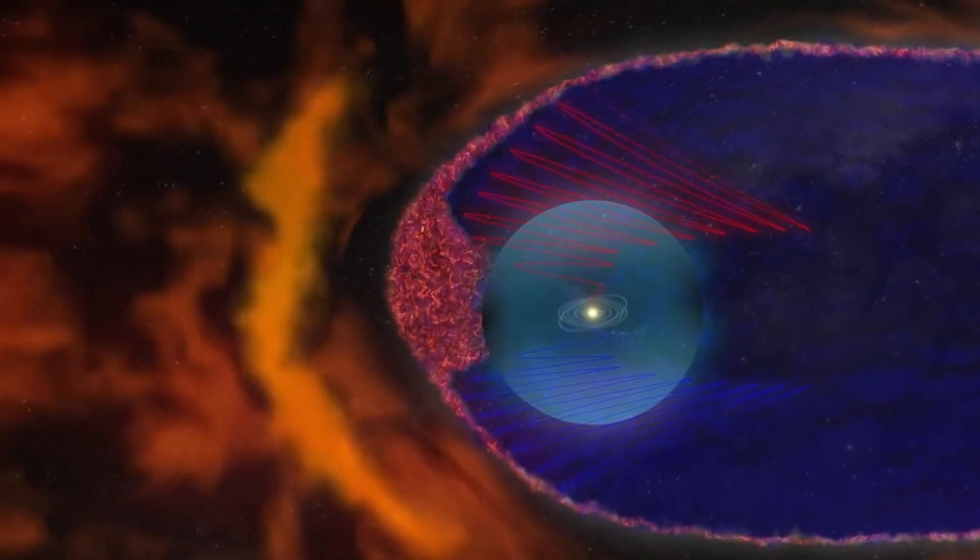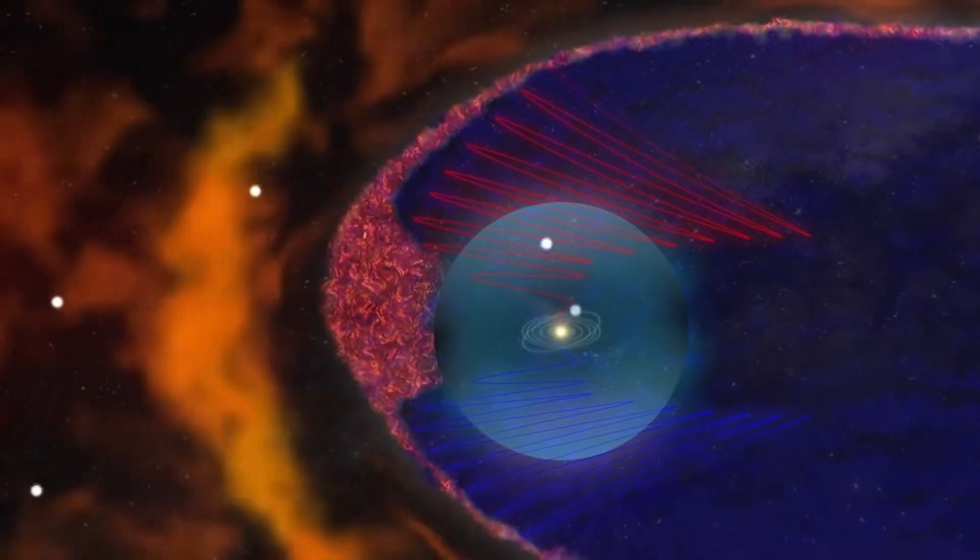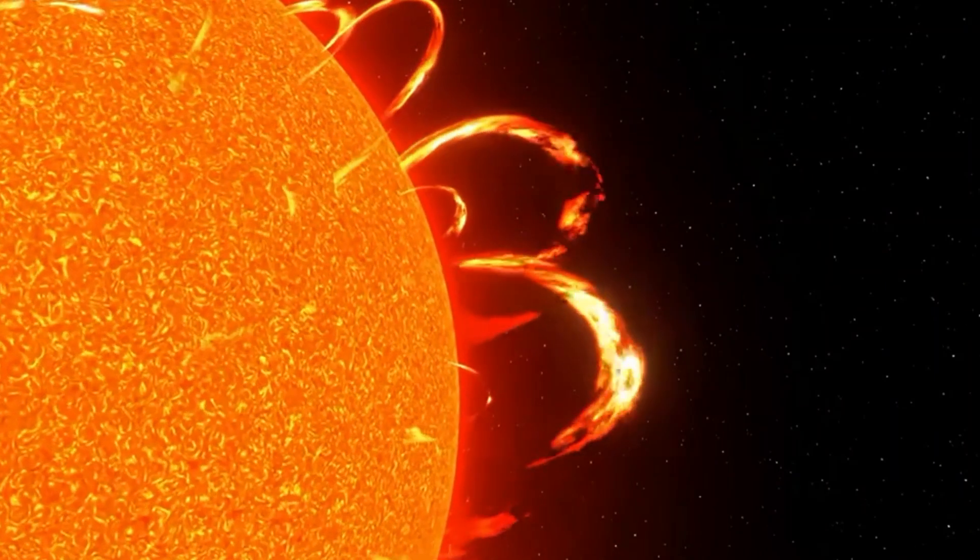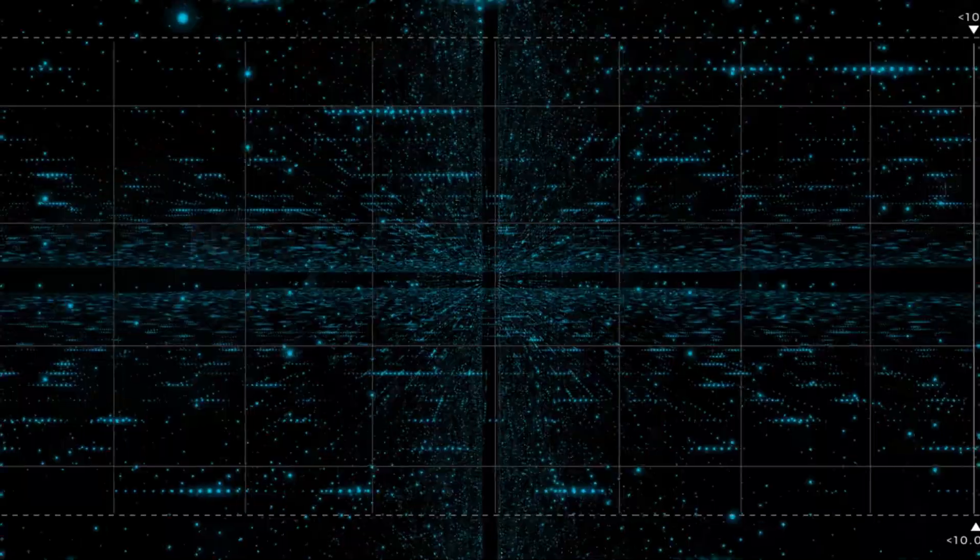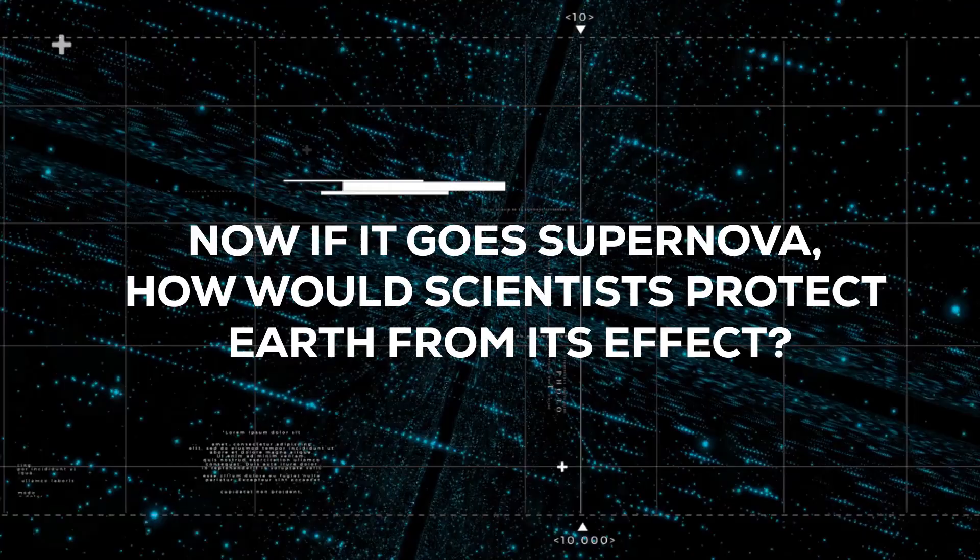It is believed that the magnetic field of Betelgeuse is several thousand times stronger than that of the sun. This strong magnetic field traps gas on the surface of the star in loops or arcs, producing visible areas of intense magnetic activity. Now, if it goes supernova, how would scientists protect Earth from its effect?